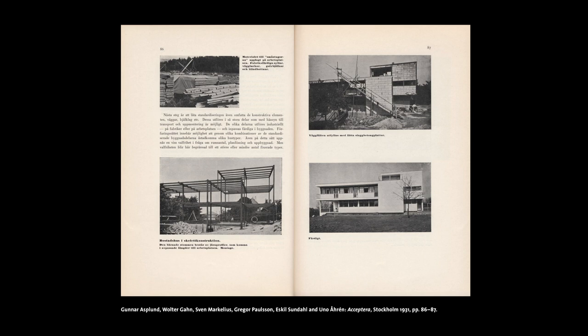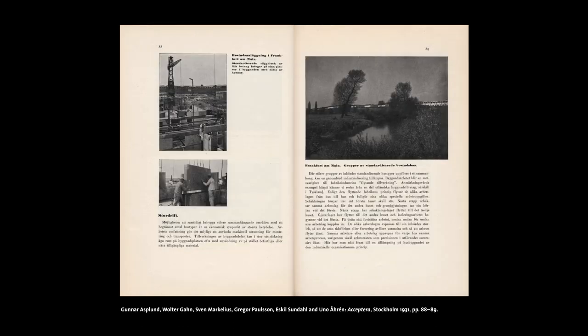They also refer to examples of industrialized prefabricated housing. It struck me that Acceptera shows three of the most well-known examples from the later half of the 1920s for prefabricated construction: the Haus Wankenhalde by Paul Artaria and Hans Schmidt, one of the most well-known steel skeleton houses from the second half of the 1920s, frequently featured in journals like Stahl und Eisen, and also Ernst May's housing in Frankfurt, presenting large-scale industrialized housing.